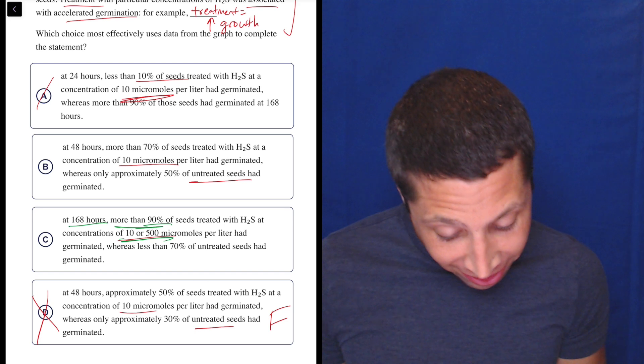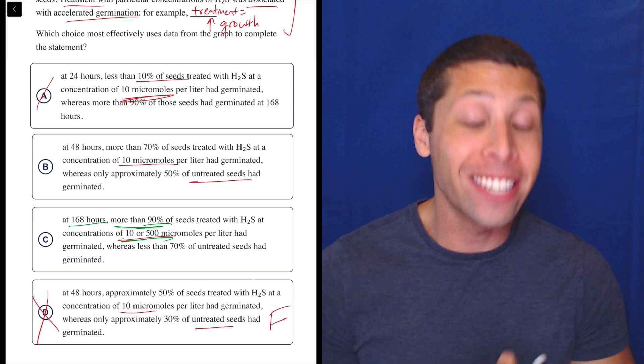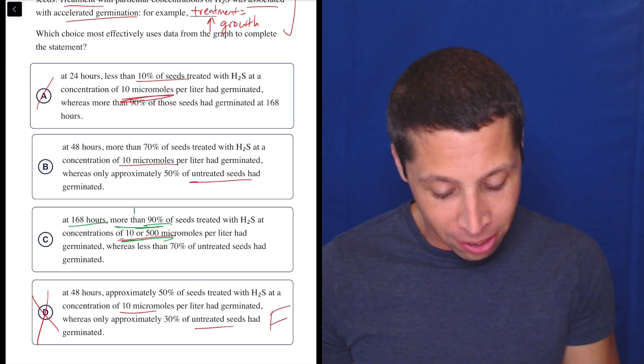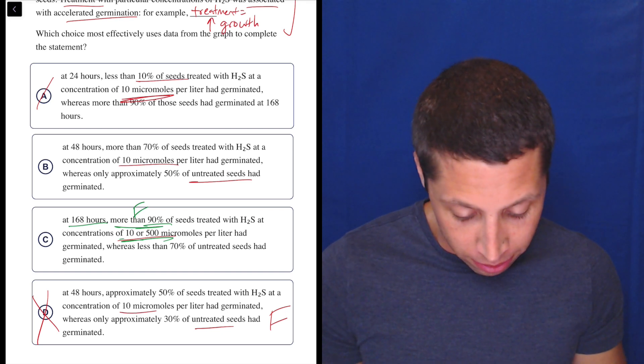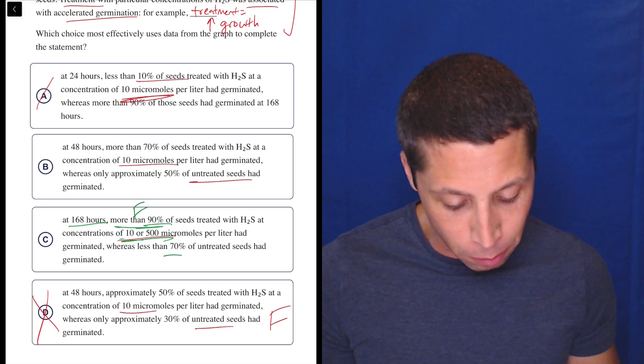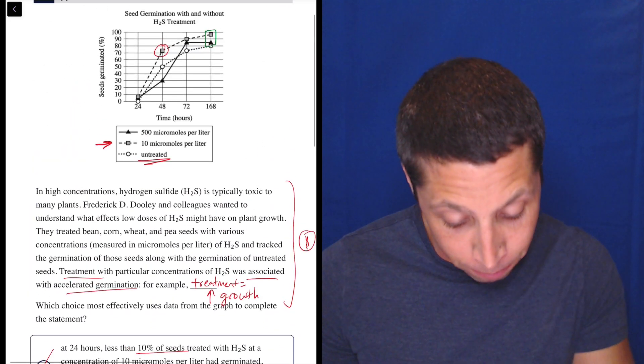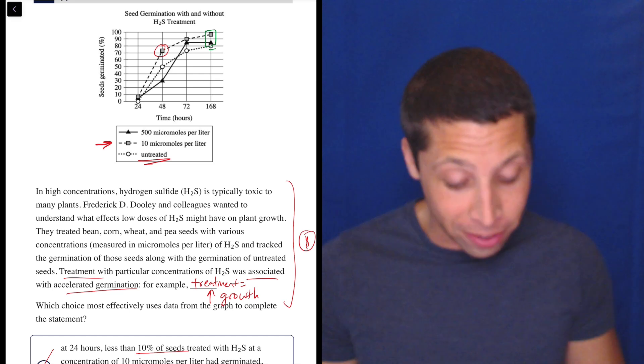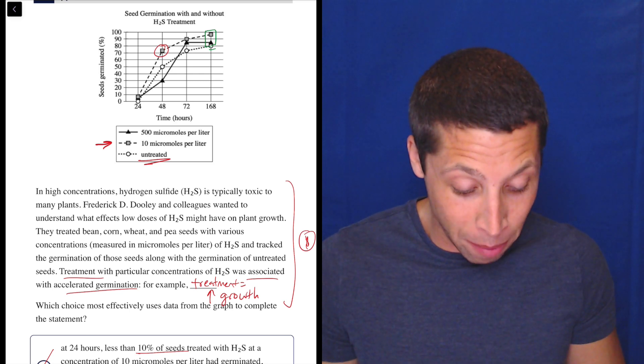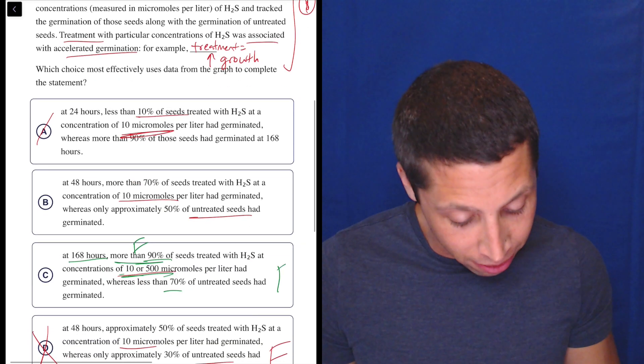Does it say, yeah, it does not say approximately 90%. It says more than 90%. So this part seems false to me. Let's see about the other part, just for the sake of it. Less than 70% of untreated seeds. How's that looking? Well, there's the untreated seeds. And that does not look like less than 70% either. That's the circle. That looks like about 80, right? So this just seems, again, totally false.